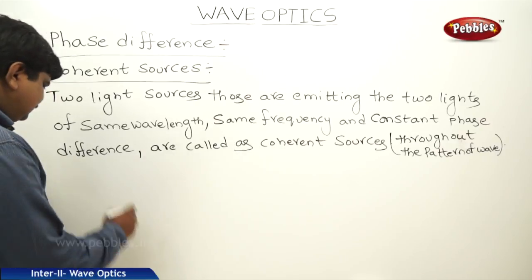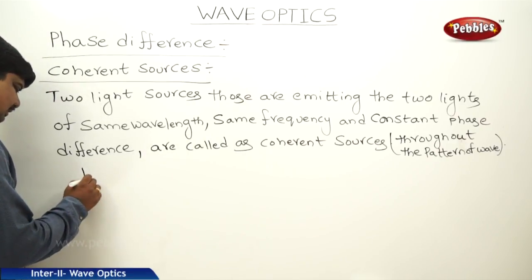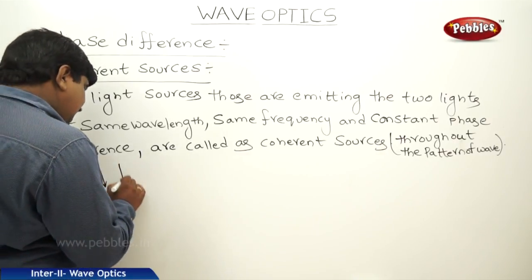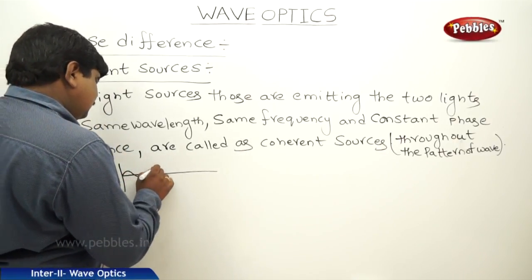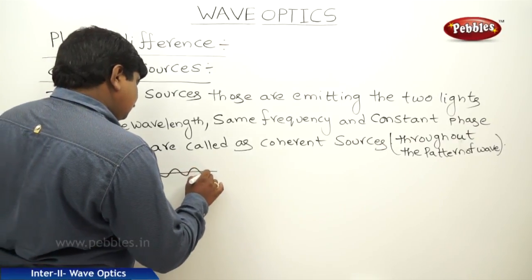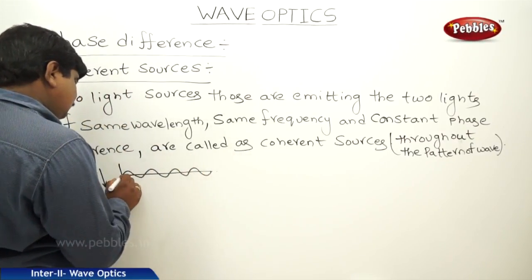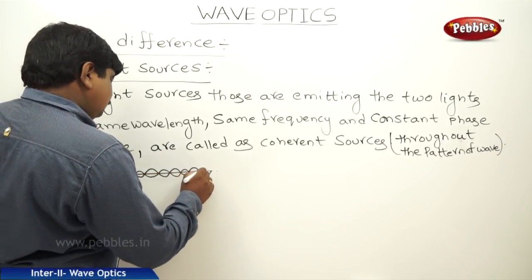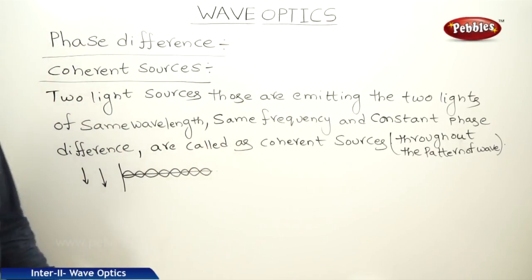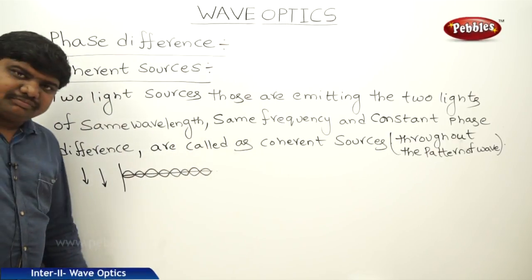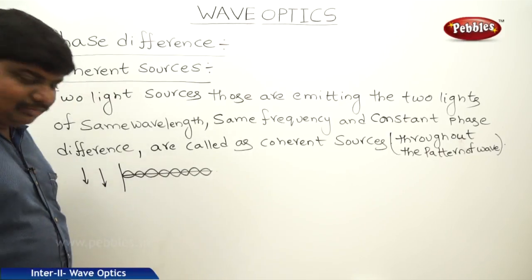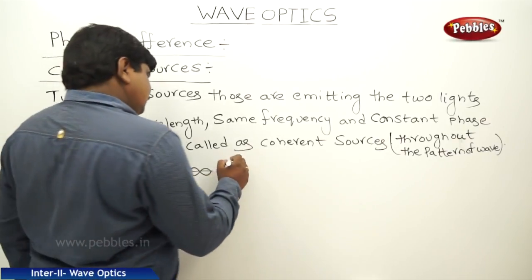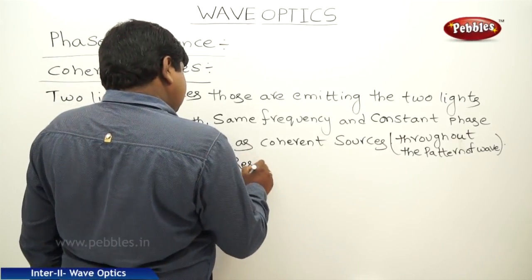That means the two waves which were produced at the same time — one wave pattern is due to source one, another wave pattern is due to source two. Their intensities are added, meaning the resultant amplitude is equal to the sum of the individual amplitudes.